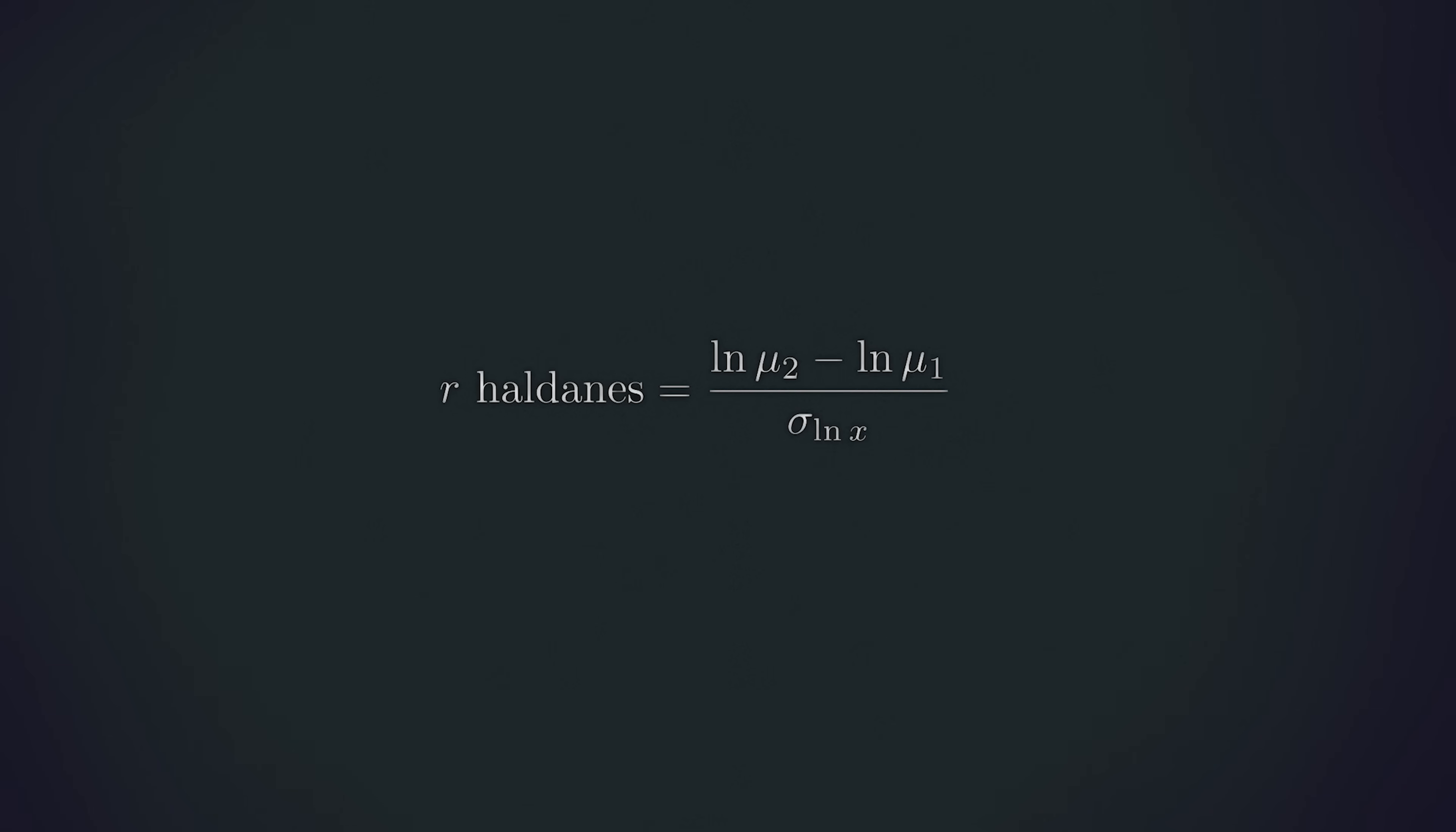Finally, you may be wondering what those logarithms are doing in the equation. These are here in order to make the Haldane dimensionless, as the difference between two logarithms is dimensionless. The advantage of this is that we're more able to cross compare the evolutionary rates of different traits.